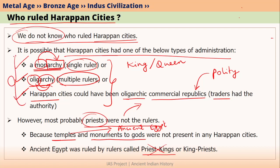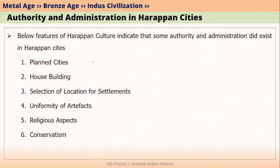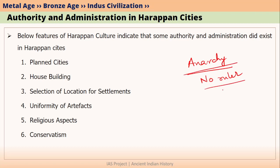So we can say that priests were not the rulers in Harappan cities. One of these three was probably the administrative system. Now the question is: how do we know there was some administration and authority in Harappan cities? Why not anarchy? Anarchy means no ruler. We can say Harappans did not have anarchy because of certain features in Harappan culture — all these features were not possible without some solid authority and administration.